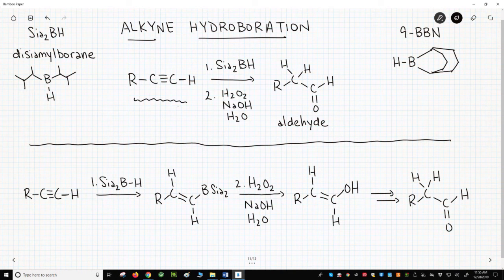As a hydroboration, you might be looking for BH3 over the reaction arrow, but instead we have this weird thing: PSIA2BH. This is disiamyl borane. Its full name and structure are in the upper left.